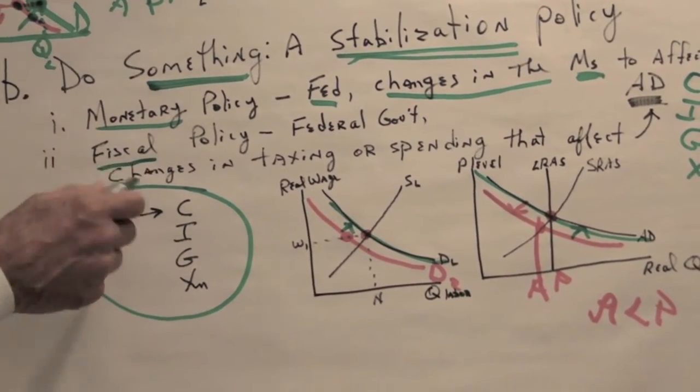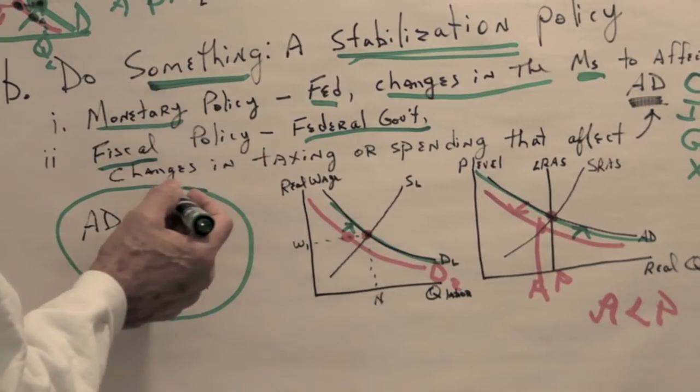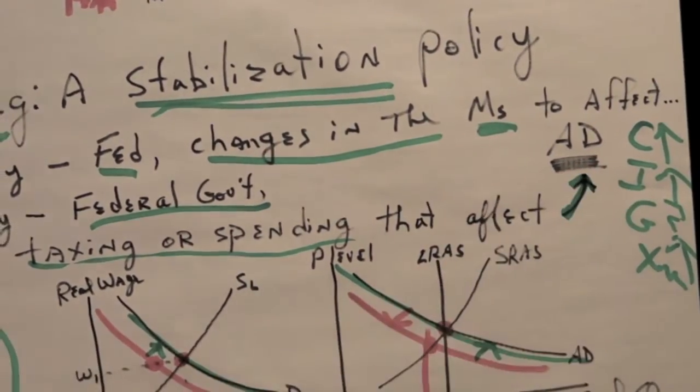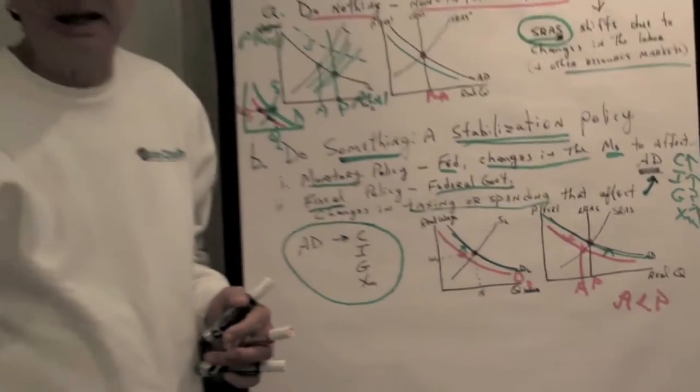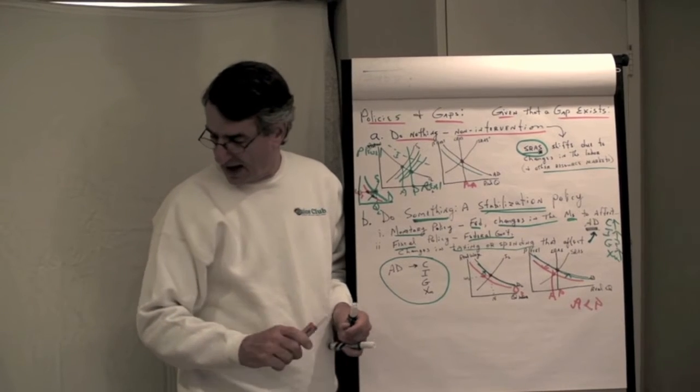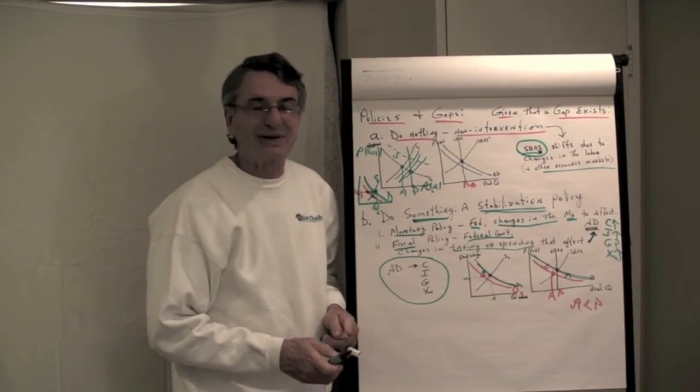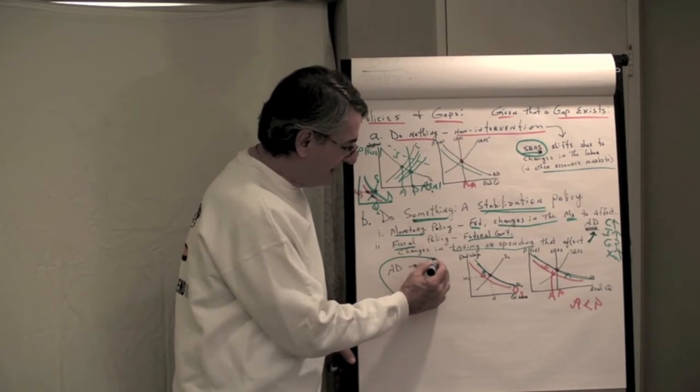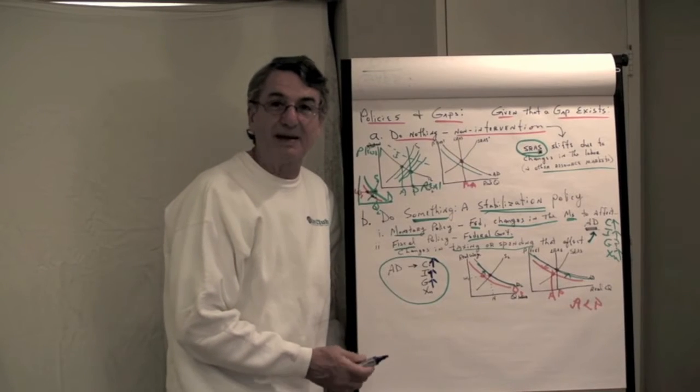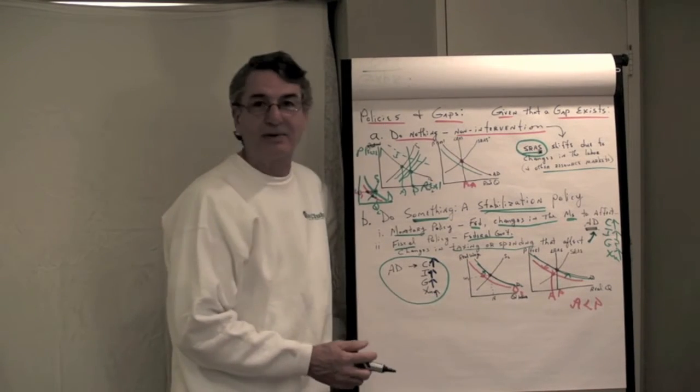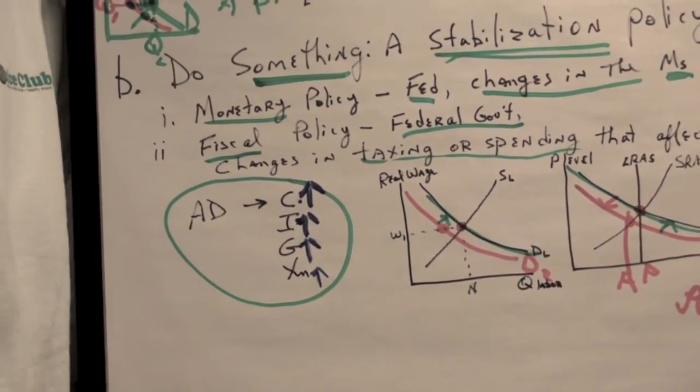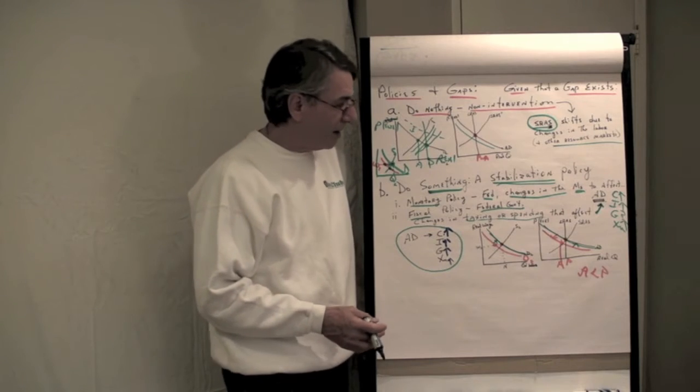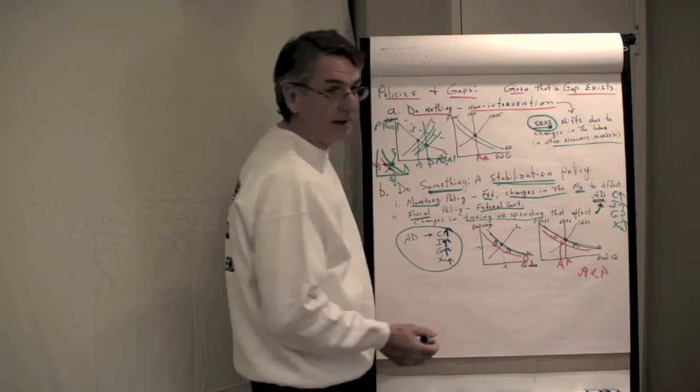But we could also have a fiscal policy. A fiscal policy is done by the Federal Government. And the fiscal policy involves changes in the taxing or spending laws that can affect aggregate demand. So that, for instance, a fiscal policy could be that the government reduces taxes. Hey, thank you. Reduces taxes, this would cause consumers to spend more. The government could also give more investment incentives, which would cause investment to go up. The government could, heaven knows they could, just spend more. Or perhaps bully foreigners to buy more American goods. Any of these policies, if they are intended to close a gap, are fiscal policies. They are the result of changes in the taxing and spending laws. And they have the effect of changing aggregate demand to close a gap.